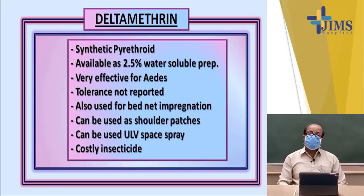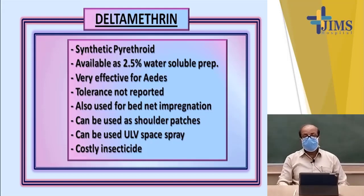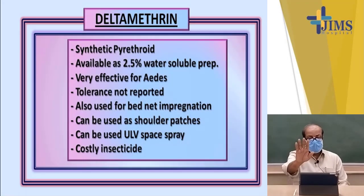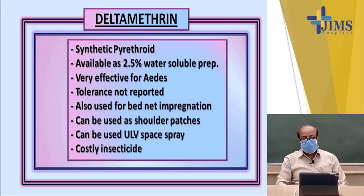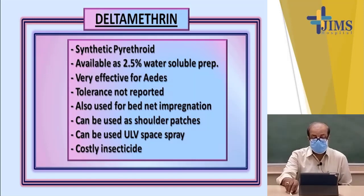Deltamethrin can also be used as shoulder patches and knee patches. Patches of cloth can be dipped in deltamethrin solution and attached to the shoulders, knees, or elbows, so that when a mosquito comes in contact with these patches, it gets in contact with the deltamethrin and dies. It is also used as ultra-low-volume space spray, though it is a costly insecticide.